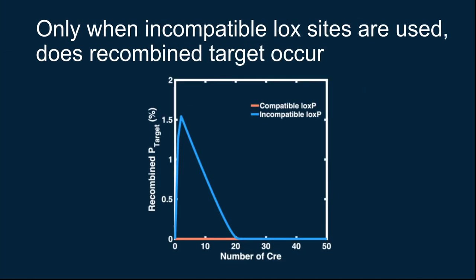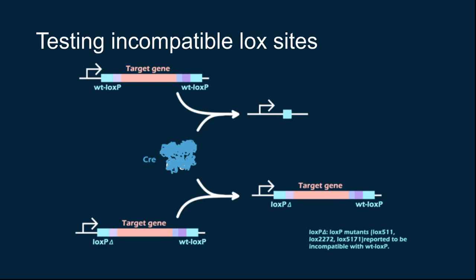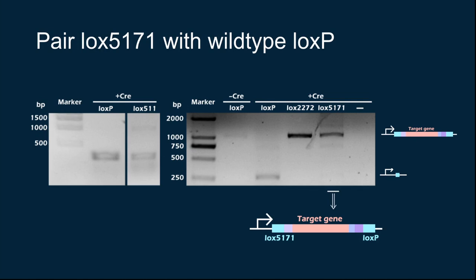This new design is also supported by our modeling result. There would be no plasmid containing recombined target if the same loxP sites are used, while the recombined product would occur when it comes to incompatible lox sites. To find the best-performing pairs of lox sites, we co-transformed the target plasmid with Cre recombinase. Then we determined the excision efficiency of all pairs by PCR amplification. Three lox sites reported to be incompatible with loxP are tested. They are lox 511, lox 2272, and lox 5171. From the result, we can see that lox 5171 and lox 2272 perform well with full-length target and no excision event. And we chose lox 5171 for further experiment.